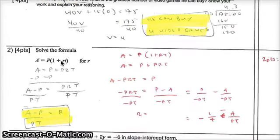Question number 2. Solve the formula A equals P times parentheses 1 plus RT for R. What this is telling you is it says solve for R. That means you need to get R by itself. There's a couple of ways of doing that. I'll show you guys one of them.